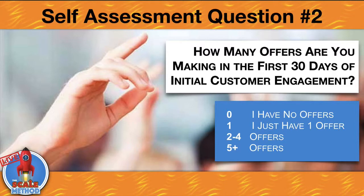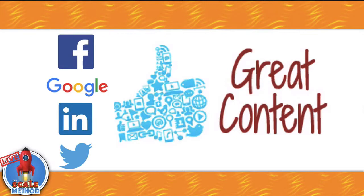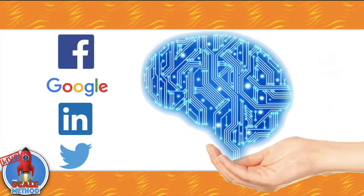Self-assessment question number two: how many offers are you making in the first 30 days of initial engagement? If someone likes your fan page, opts into your email, or watches a video — if they're in your engagement funnel — how many offers are you making in the first 30 days? Ideally, you want two to four offers in the first 30 days. With great content and highly qualified people consuming that content, Facebook, Google, LinkedIn, and Twitter will allow you to scale your programs in ways you've never thought possible. The artificial intelligence will make everything happen as long as you set up these first steps.